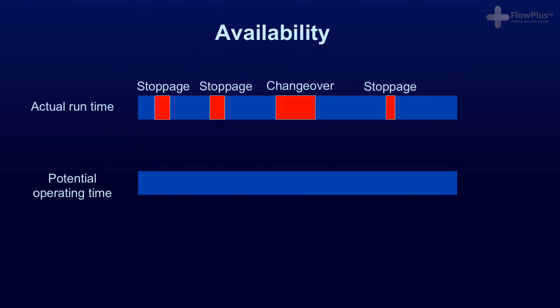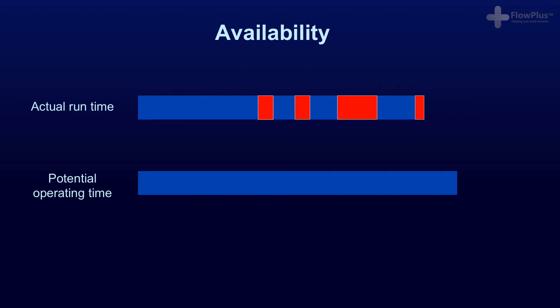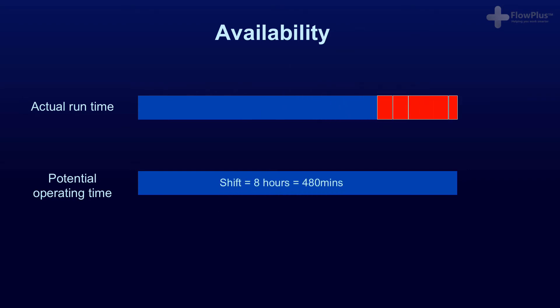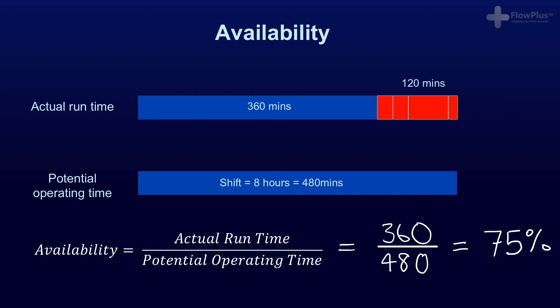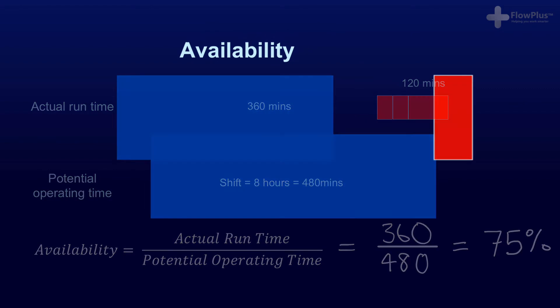The first thing to measure is availability. Availability shows the amount of time a machine is available compared to its potential operating time. For example, if a shift is 8 hours long — 480 minutes — and the machine is only operational for 360 minutes due to machine downtime, stoppages, changeovers, or any other reason that causes the machine to stop, then the availability is actual run time divided by potential operating time: 360 divided by 480, which equates to 0.75 or 75%.